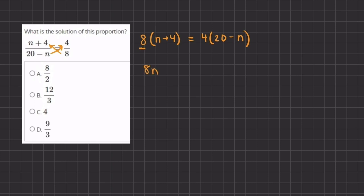This equals 4 times 20 which gives us 80 and 4 times negative n which gives us negative 4n.